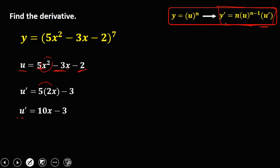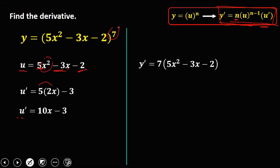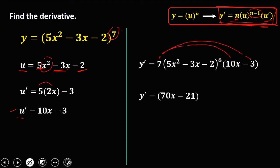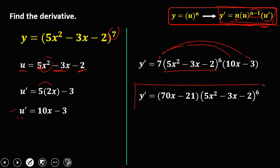Substitute into the formula: y prime equals n — the exponent, which is 7 — times u, which is (5x squared minus 3x minus 2), to the power n minus 1, so 7 minus 1 equals 6, then times u prime which is 10x minus 3. Simplify: 7 times 10x is 70x, and 7 times negative 3 is negative 21. So the derivative is (70x minus 21)(5x squared minus 3x minus 2) to the power 6.